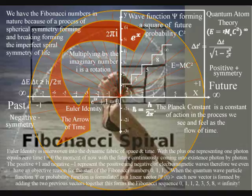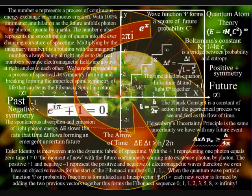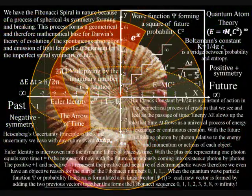When the quantum wave particle function or probability function is reformulated as a linear vector, each new vector is formed by adding the two previous vectors together. This forms the Fibonacci sequence.